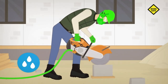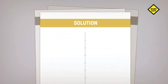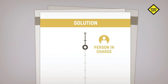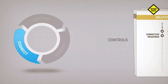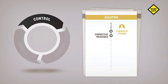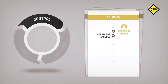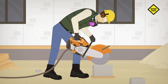For each solution that you select, it's important to first establish a timeframe and designate a person in charge before implementing the corrective measures. Once the hazards have been corrected, it's time to put the controls in place. This step helps ensure that the chosen solutions are both effective and sustainable.